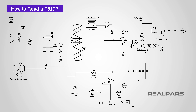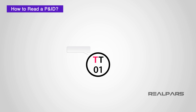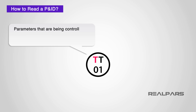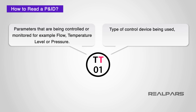The instrumentation codes listed in P&IDs follow a standard format. After some practice reading P&IDs, you will know these codes by heart, but in the meantime there are many resources on the web where you can download these tables for reference. The first letter of the code identifies the parameters being controlled or monitored — for example, flow, temperature, level, or pressure. The next letter defines the type of control device being used, for example, transmitter, valve, or controller.